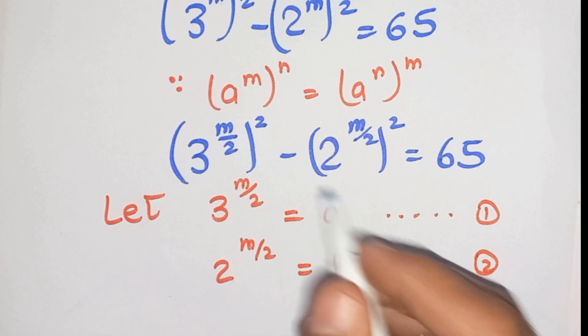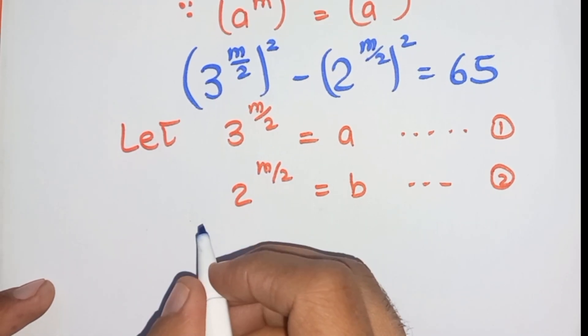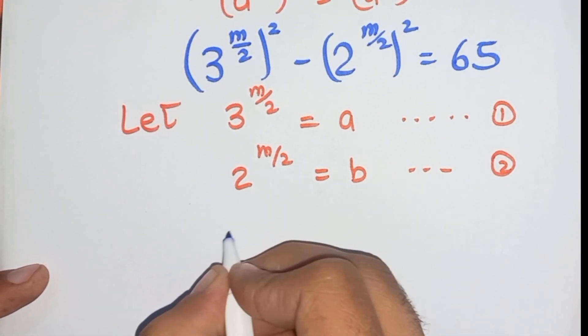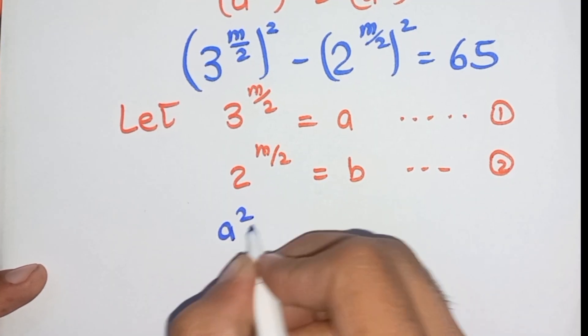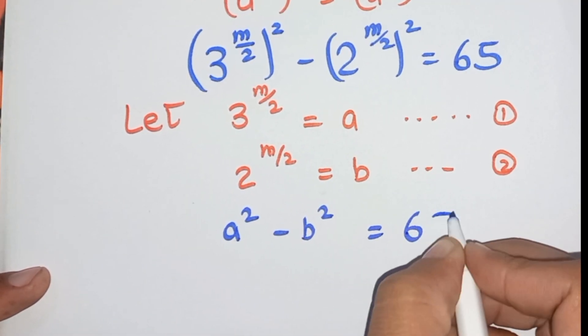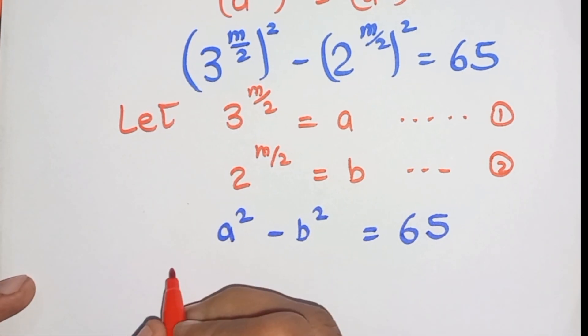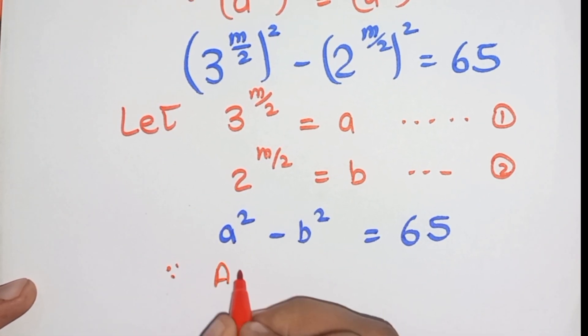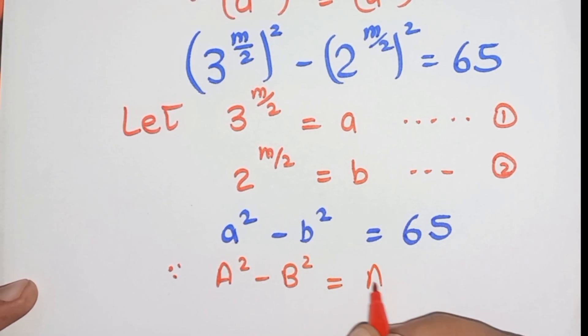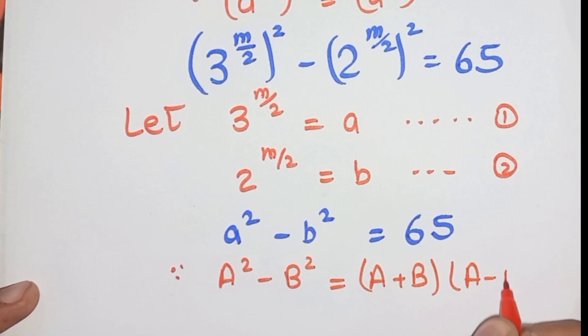So put it in the main equation. As we put it in the main equation, the result is that a^2 - b^2 = 65. We know the formula: a^2 - b^2 equals (a+b)(a-b).